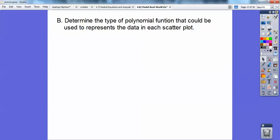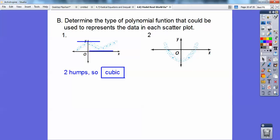So determine the type of polynomial functions that we could use to represent the data in each of the scatter plots. So say I had a scatter plot that kind of gave me something like that. Can you see that right there? Can you see, look at the humps, how many humps? Looks like there's two humps going on right there. So two humps tells me it's going to be a cubic. So let's try this guy right here. How many humps do you see there? I see one hump, so probably a quadratic.